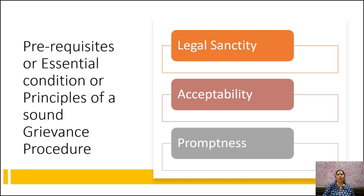Third is promptness. The grievance procedure must aim at speedy redressal of grievances. This can be ensured in the following ways: as far as possible, the grievance should be settled at the lowest level; there should be only one appeal; time limit should be prescribed and rigidly enforced at each level; and different types of grievances may be referred to appropriate authorities.